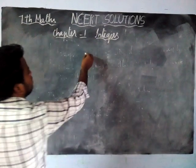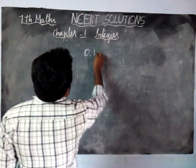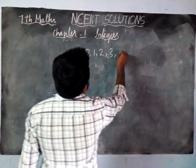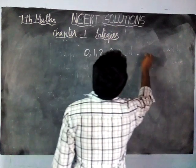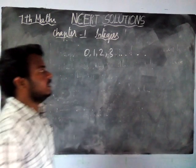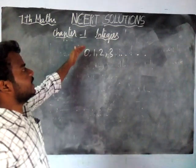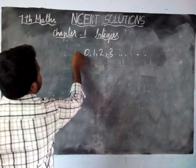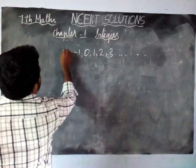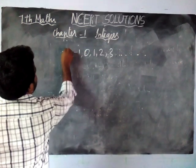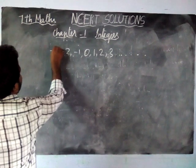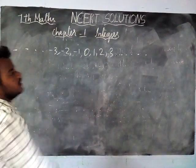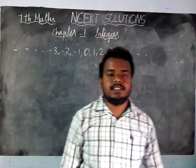A whole number is having 0, 1, 2, 3, etc. Then, if we are adding negative numbers, that is called integers.